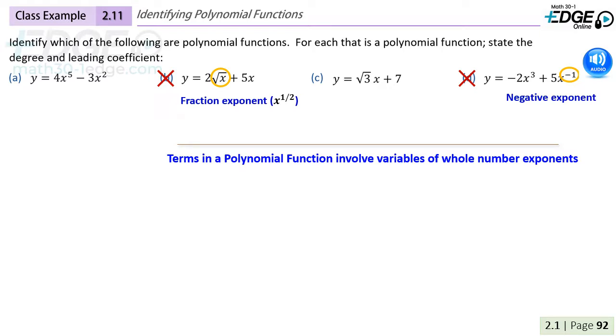This leaves us with answers a and c, which are both polynomial, and we can identify in example a that the degree is 5 and the coefficient of that term is 4.